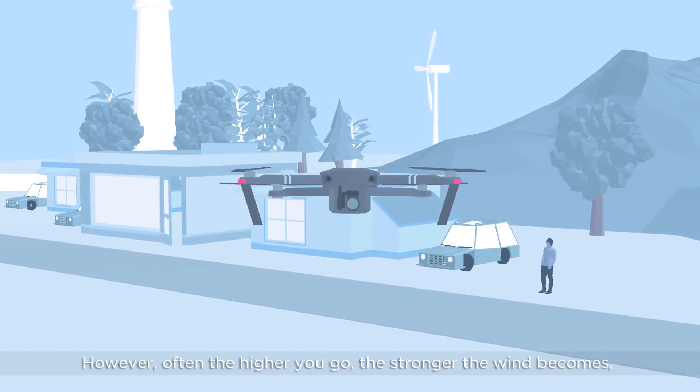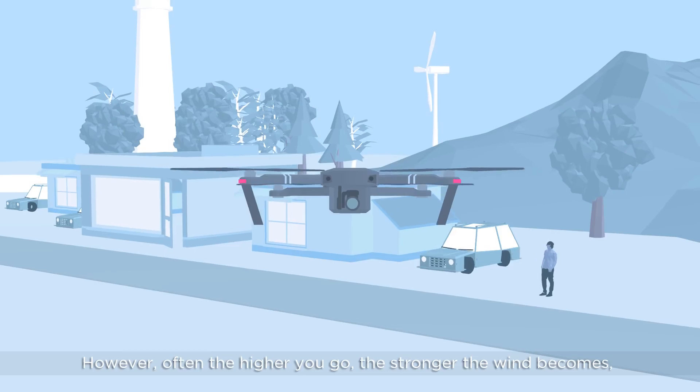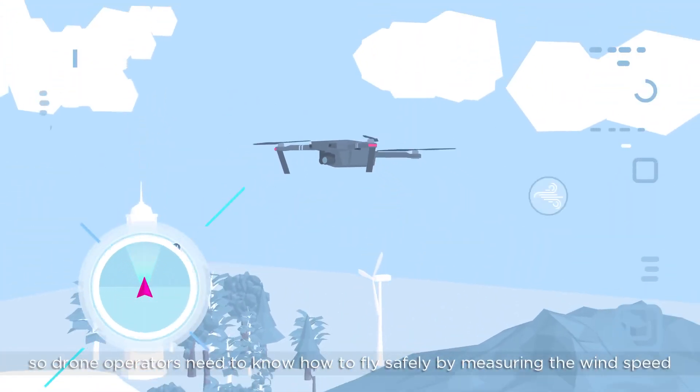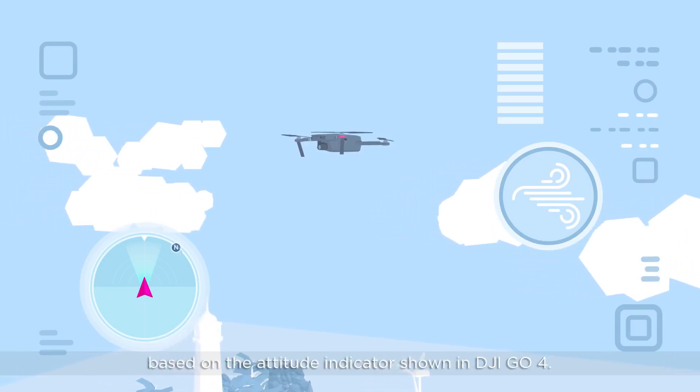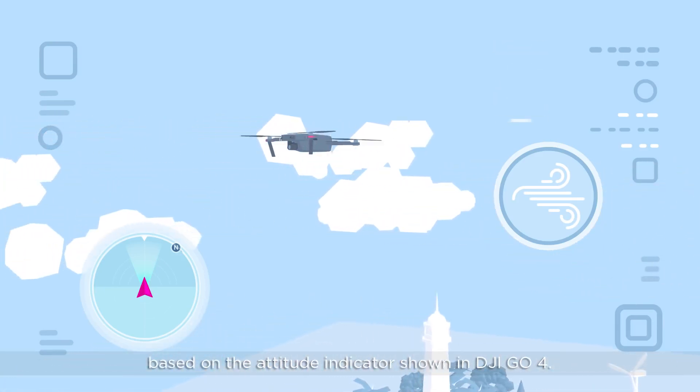However, often the higher you go, the stronger the wind becomes. So drone operators need to know how to fly safely by measuring the wind speed based on the attitude indicator shown in DJI GO 4.